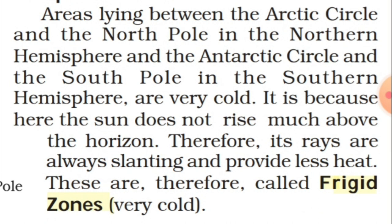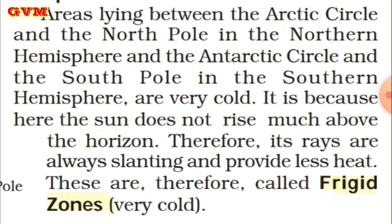The areas lying between the Arctic Circle and the North Pole in the Northern Hemisphere, and the Antarctic Circle and the South Pole in the Southern Hemisphere, are very cold. This is because the sun does not rise much above the horizon, so its rays are always slanting and provide less heat.